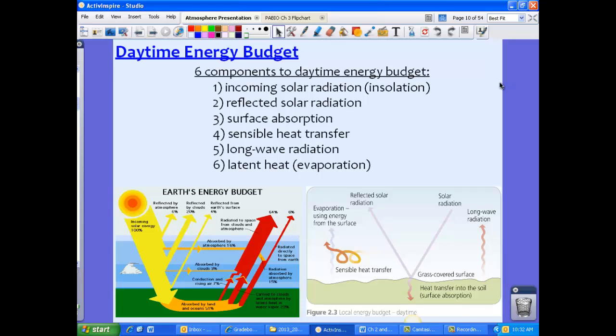Now specifically let's talk about the daytime energy budget. Now there's actually six components to the daytime energy budget. These are incoming solar radiation, or insolation, we'll talk about that, reflected solar radiation, surface absorption, sensible heat transfer, long wave radiation, and latent heat, which in this case for the daytime is evaporation. I have two figures for you. The one on the right comes directly from your textbook. It's pretty straightforward and simple. The one on the left is also a different type of energy budget. This one is a little bit more complex. It shows you the amount by percentage of what leaves, what gets reflected, scattered, and things like that. So each one has its limits and each one has its benefits. So take a look at both to see which one works for you. Throughout this lesson I use the one on the right, the one from your textbook.